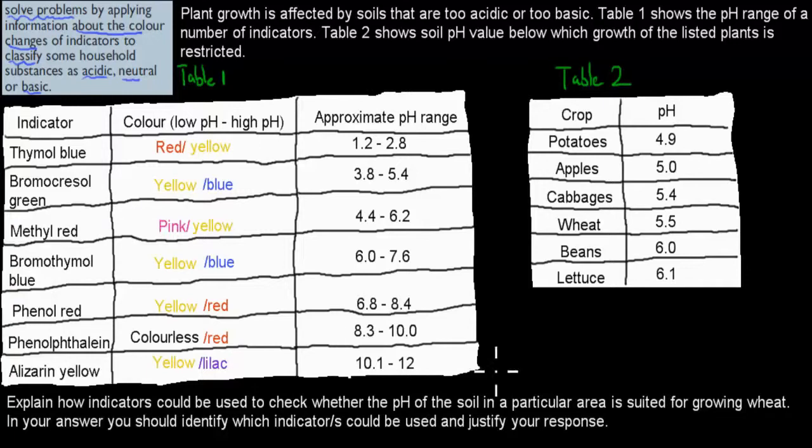So in this case, we're actually being asked, the question is explain how indicators could be used. So explain as a verb, how indicators could be used to check whether the pH of the soil in a particular area is suited for growing wheat. We have to check and explain how we can check if wheat could be grown. And wheat has an ideal pH right here of 5.5. So that's its ideal pH range.